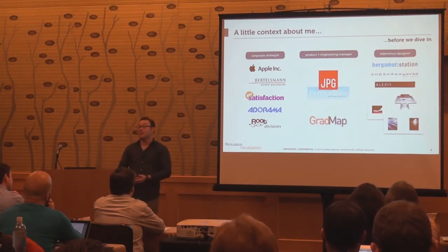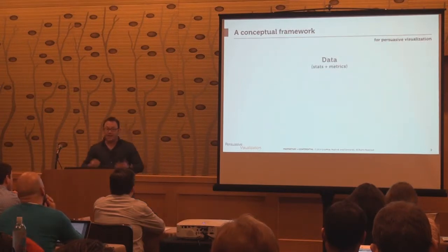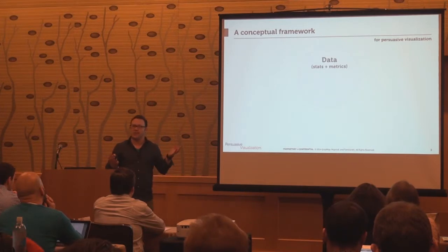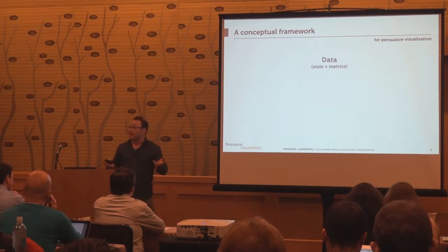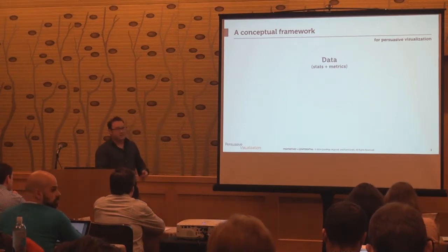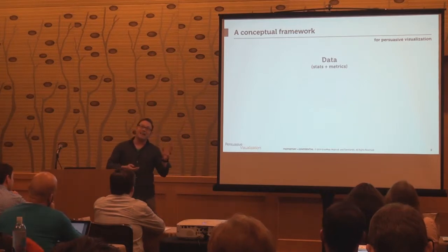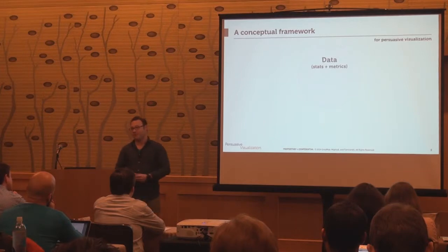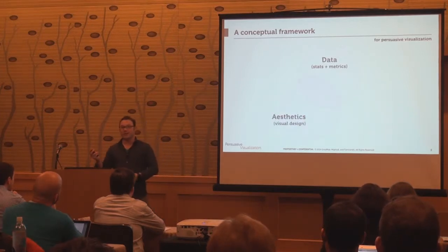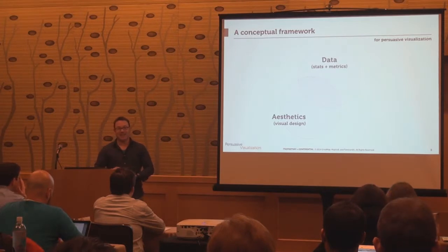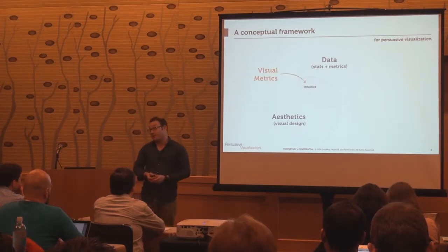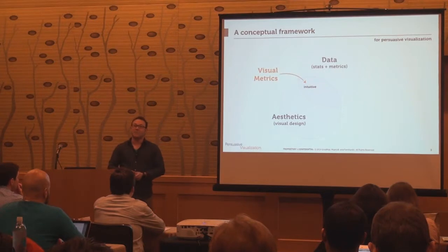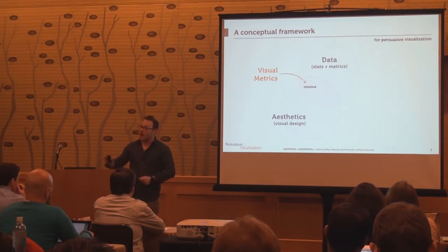Let's talk about persuasive visualization and specifically a conceptual framework: what do I mean by data plus design equals engagement? We're at a data conference, so let's start with data — stats and metrics. When you combine data with two different types of design, you end up with persuasive visualization. The first type is aesthetics — visual design — making things look pretty. At the intersection of those two things is what I call visual metrics. Things become highly intuitive when they look really beautiful and simple on a page; there's less argument about what's going on and more discussion about how to solve the problem.